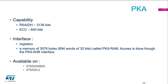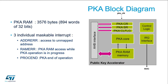Availability of this IP is on the WB family and also the L5. Looking at the block diagram, the PKRAM has already been mentioned. We also have the PKE control register, where you specify which operation you want to perform, as well as status registers and clear flags.